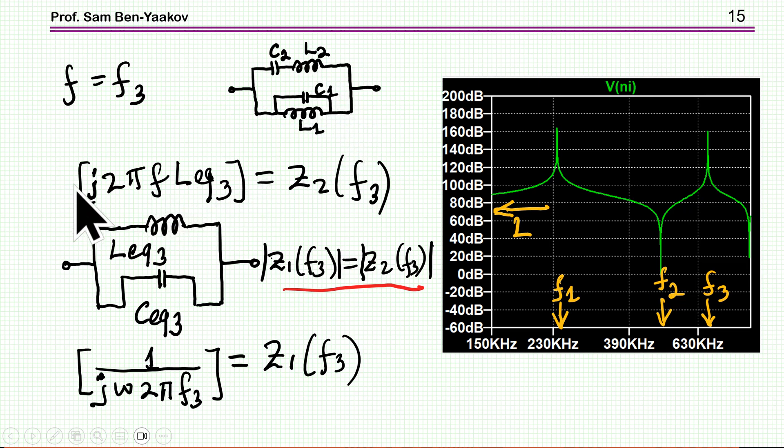And therefore, we have this equation here for Z2. On the other hand, since we are at very high frequency above the resonance here, and this is a parallel resonance, the impedance of the inductor is very high.